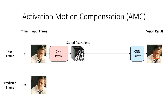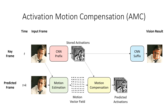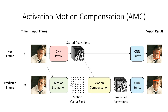When we compute a predicted frame, we analyze the motion between the two frames and produce a vector field, which is used to perform motion compensation on these stored activations, resulting in predicted activations. These predicted activations are sent through a normal unchained CNN suffix to give us our results. We get significant savings because there's significantly less computation for the motion estimation and compensation over the prefix.